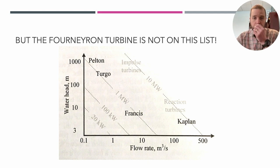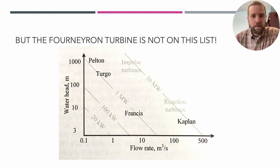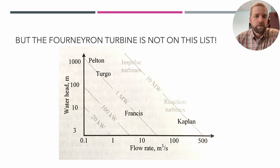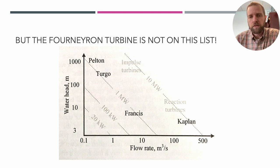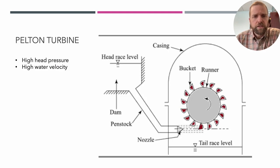Interestingly, the Fourneyron turbine doesn't appear on the textbook's list of modern turbines. The figure shows four turbines: the Pelton, Turgo, Francis, and Kaplan. Apparently, while Fourneyron's turbine revolutionized hydropower, these others are better suited, more efficient, and perhaps more scalable. There are two types: impulse turbines and reaction turbines, and we'll examine the difference between them.